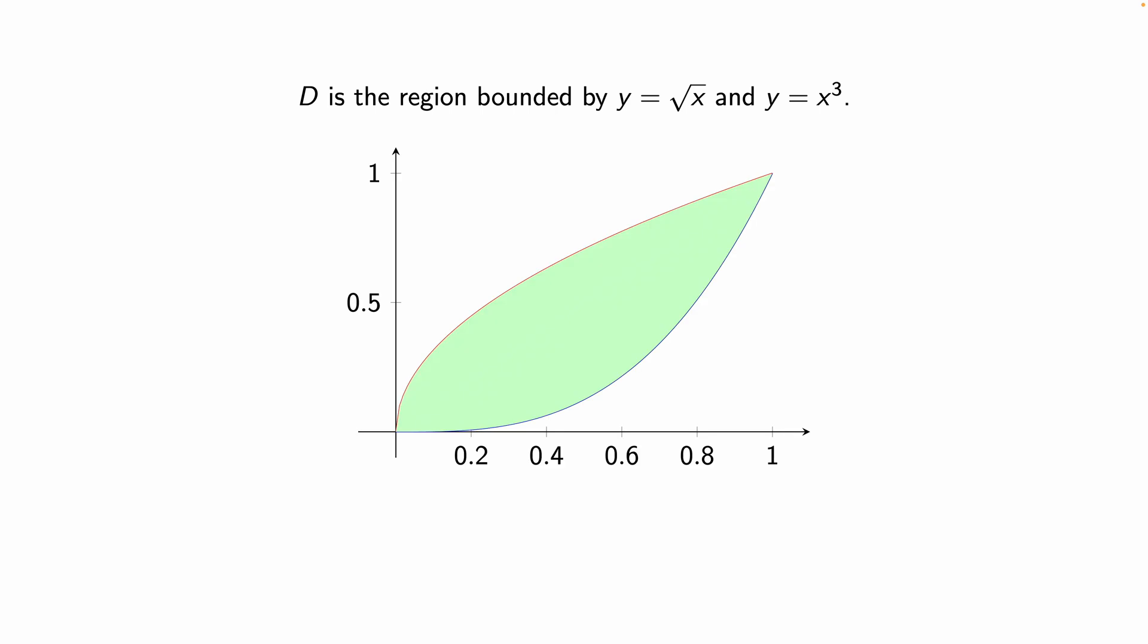And really the key insight here is that after X equals one, X cubed becomes greater than root X forever. But between zero and one, it's the other way around. And so we just want that green zone and that gives us these inequalities here.